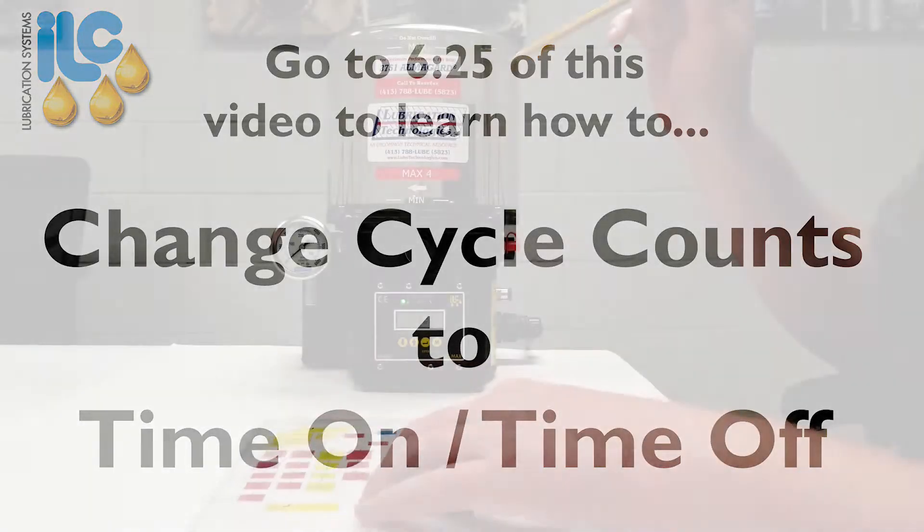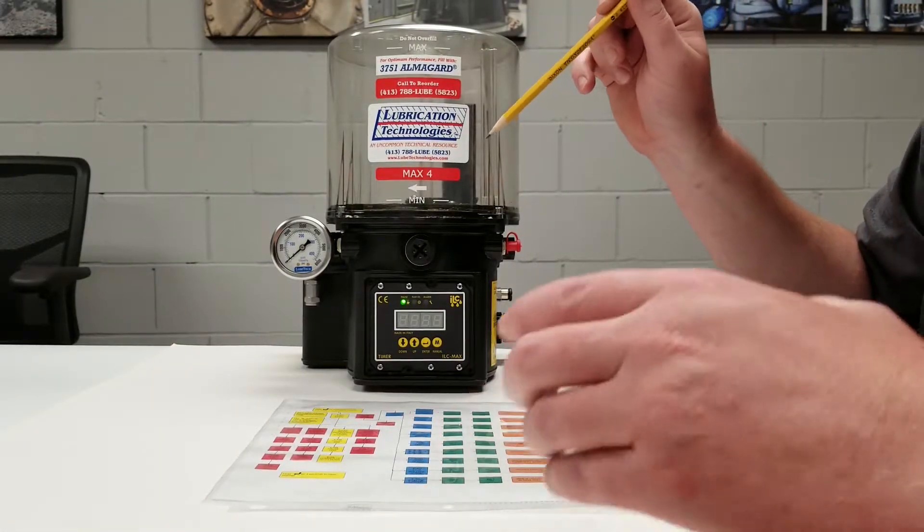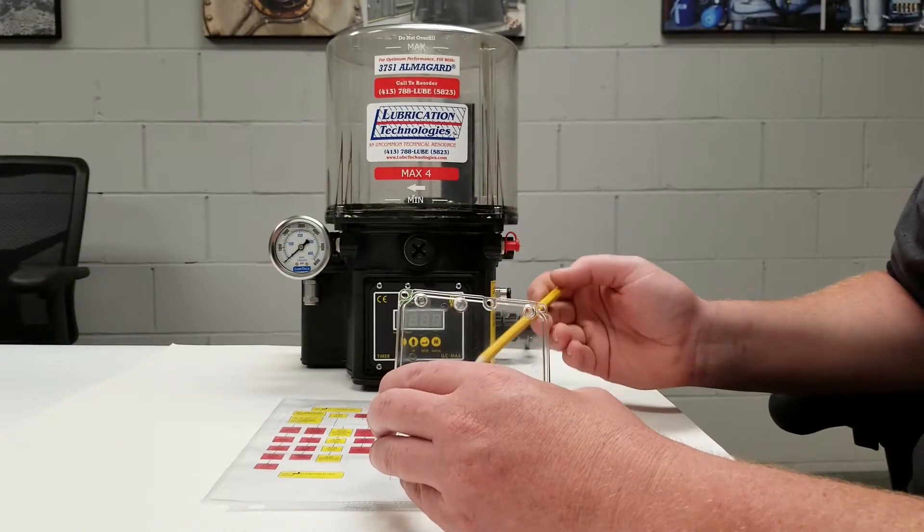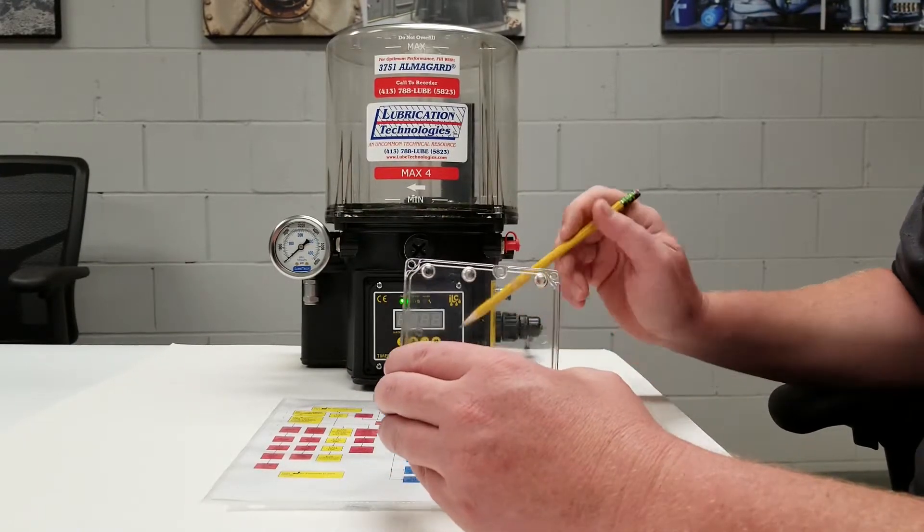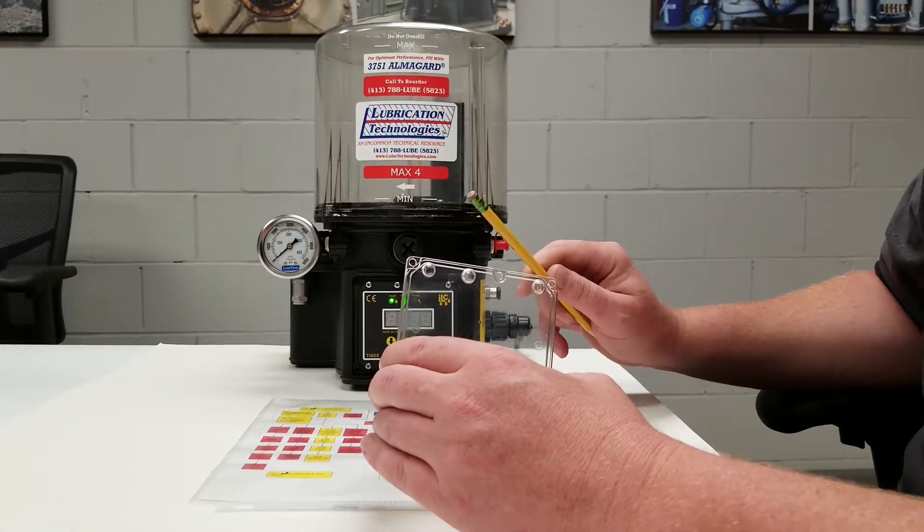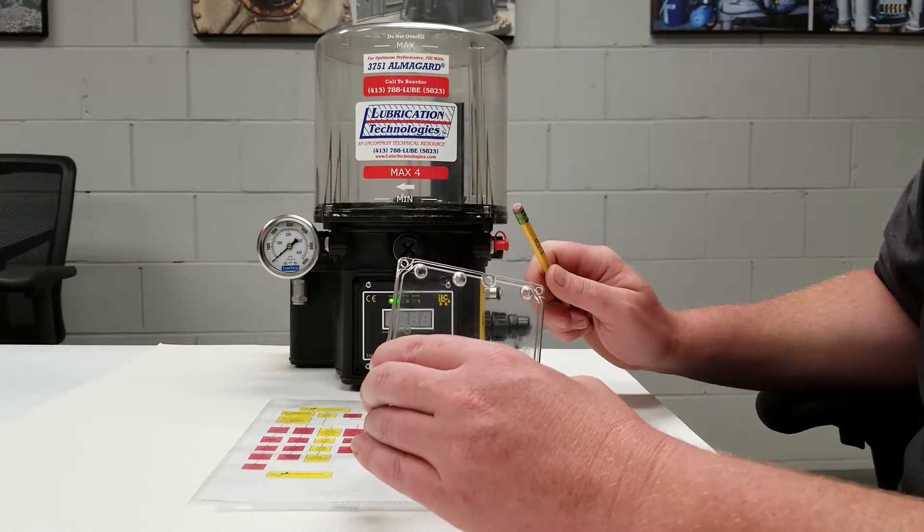Lastly I want to mention, once you have changed your cycle time it is very important to put the plastic screen back on. This helps prevent any water from getting in the timer and anybody from accidentally hitting any buttons or changing the cycle time.